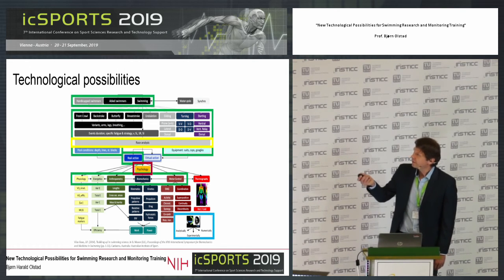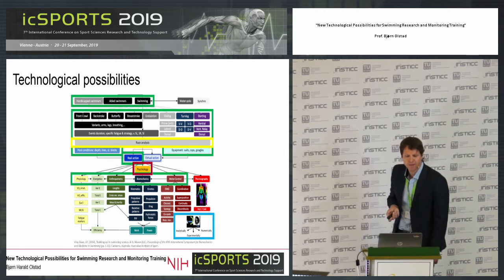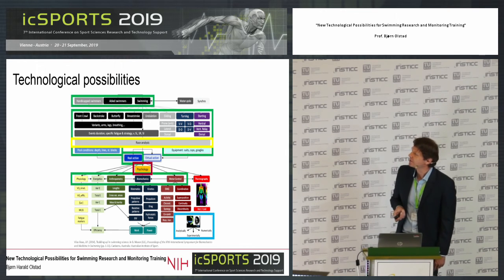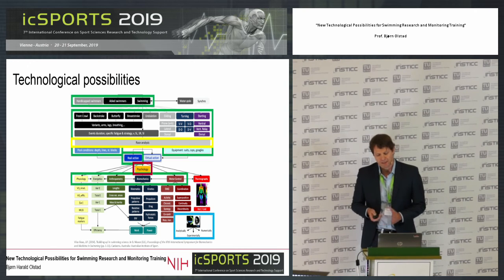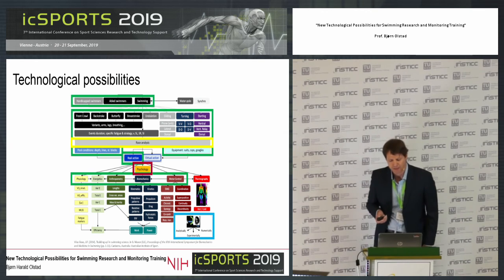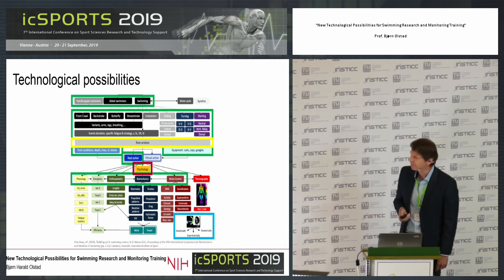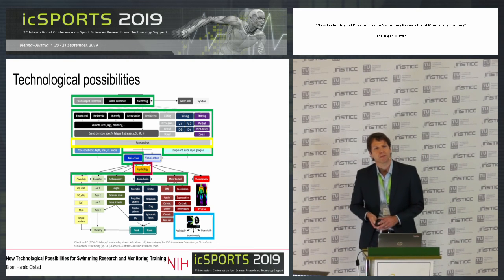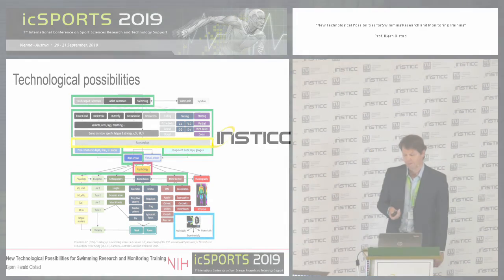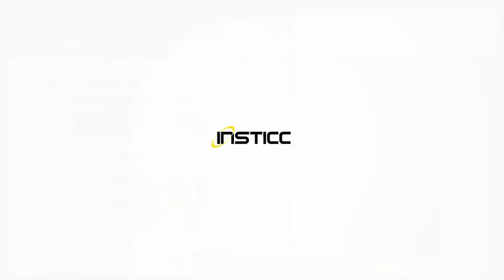In the bottom green square, you find physiology, energetics, anthropometry, biomechanics, and motor control. Our technologies cannot measure all of these underlying factors, but at least one or more of these parameters is possible. You also find psychology in red. It's not our main area of expertise, but we collaborate with our department of coaching and psychology in order to evaluate the mental health and competition strategies of the swimmers.